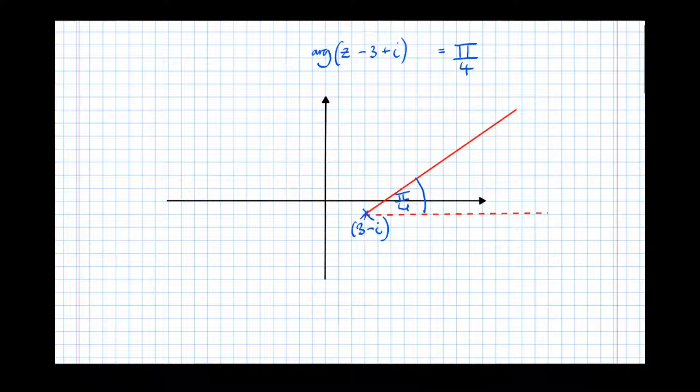So it's a half line that starts at 3 minus i. We've taken the half line that starts at the origin, we've translated 3 in the positive real direction and minus 1 in the imaginary direction. And that's basically the theory behind straight lines when it comes to drawing them on the Argand diagram.